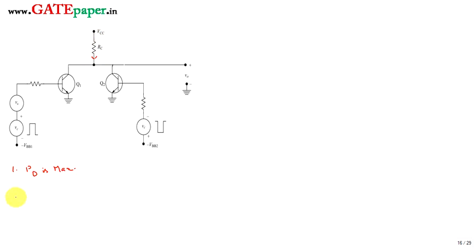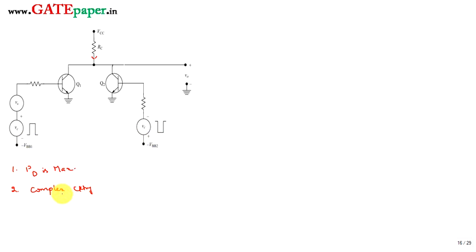Second disadvantage: the circuit is complex. It requires many components along with additional biasing voltages — minus Vbb2 and minus Vbb1 — which are two DC biasing voltages. This means we must have two extra power supplies, or at least one dual power supply, making the circuitry complex with more components.